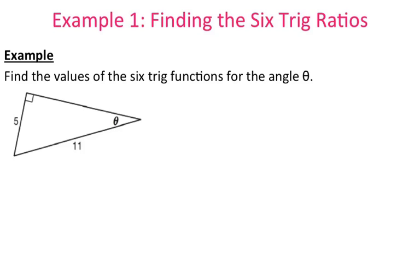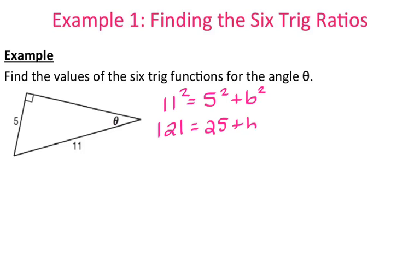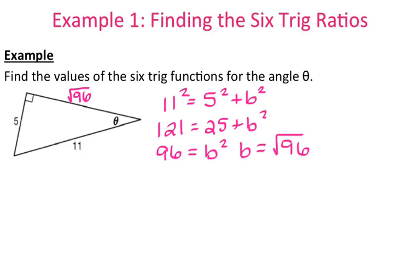So I want to find the 6 trig ratios, which means I need to find all 3 sides first. I only know 2 of the sides, so I'm missing this 3rd side. I'm going to use the Pythagorean theorem to find that 3rd side. My hypotenuse is 11 and one of my legs is 5. So that's 121 equals 25 plus B squared. 121 minus 25 is 96, so B is the square root of 96. I'm just going to leave it as the square root of 96, because our goal is to find the value of the 6 trig functions, not simplify the radical.